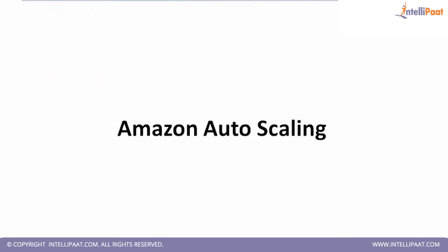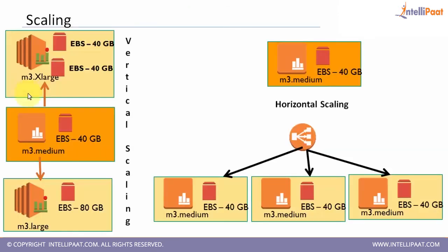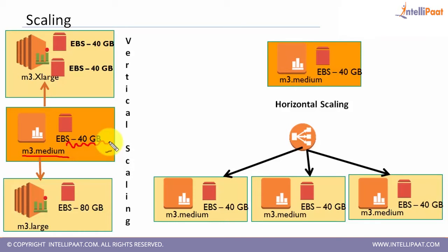What are the types of auto scaling in the market? Suppose you have an M3.Medium instance size and you have an EBS root volume of 40 GB. Now if you want to increase the capacity because your load is increasing, one way is to change the size from M3.Medium to M3.Large.